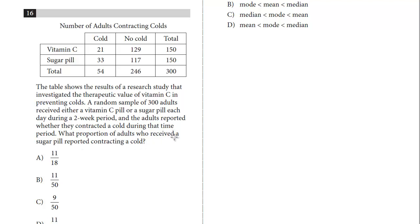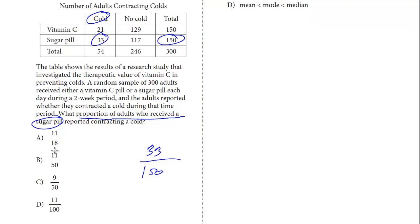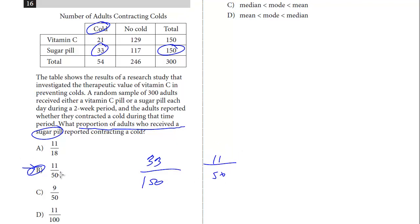This is just a probability question, a proportion. We're only asking about adults who received this placebo, this sugar pill. So if we look at the table, that's the total. Only those people who received the sugar pill, what proportion of those contracted a cold? So cold, just 33 over 150, that's it. We don't have this in the choices, but an equal ratio looks like B because we divide both sides by 3. 33 divided by 3 is 11, 150 divided by 3 is 50, and that's the answer, B.